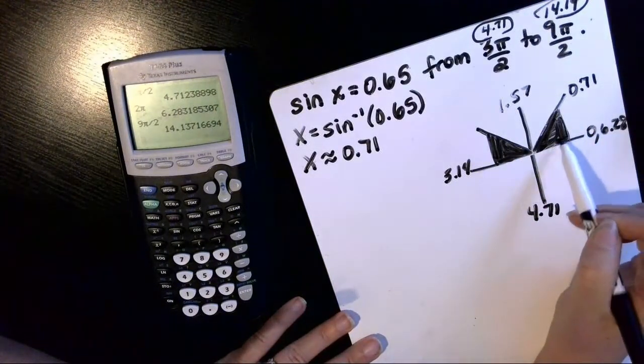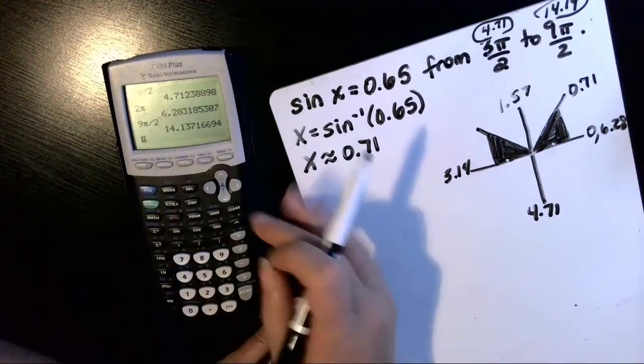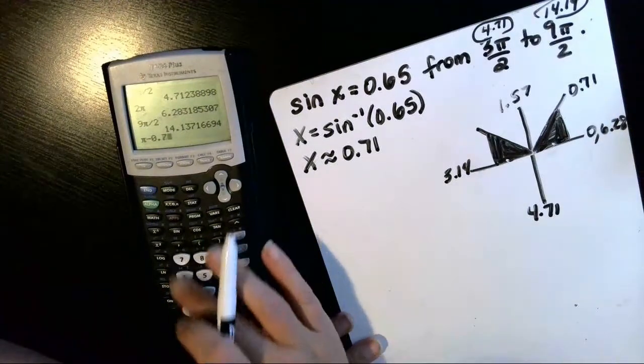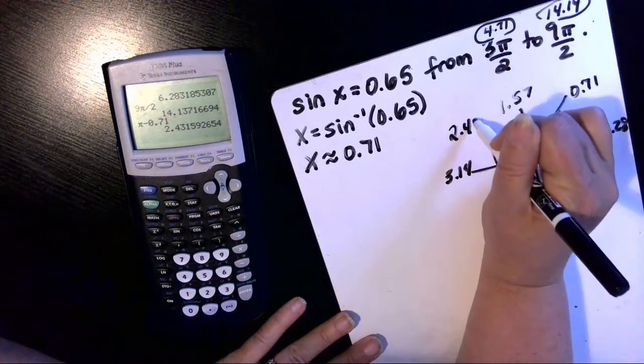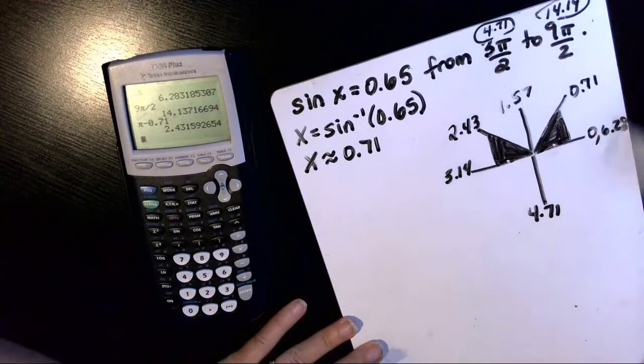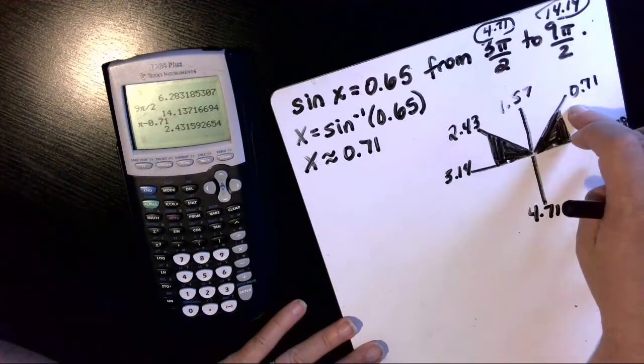And they're going to be the same reference angle. So if I start at pi and I subtract my 0.71 reference angle, that makes this angle 2.43, which still isn't in the range, 4.71 to 14.14. But we do know that that's our quadrant 2 answer. This is our quadrant 1 answer.